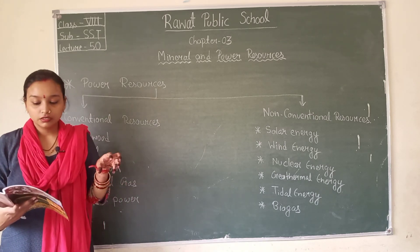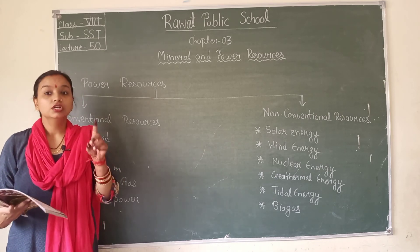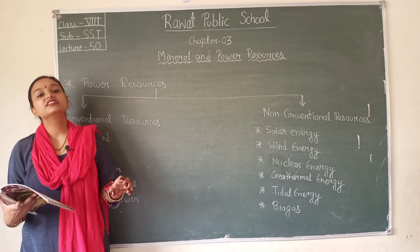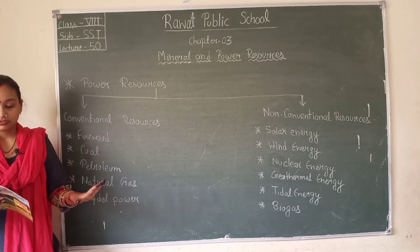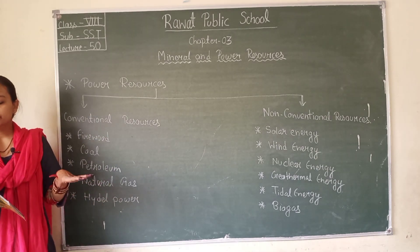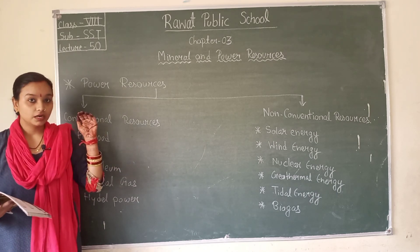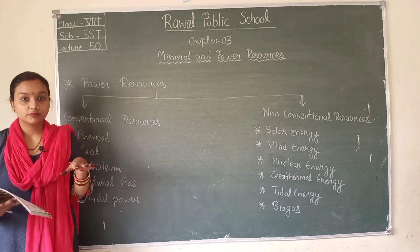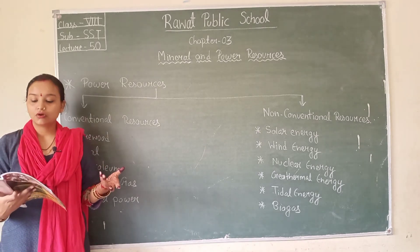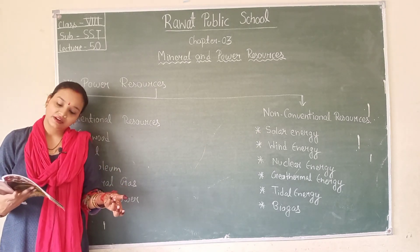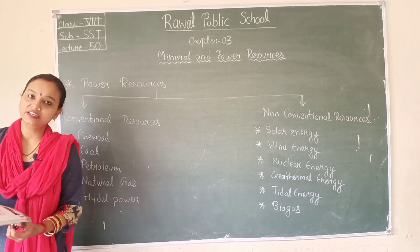One-fourth of the world's electricity is produced by hydroelectric power. Leading producers are Paraguay, Brazil, China, and India. In India, major hydroelectric projects include Bhakra Nagar Dam, Gandhi Sagar, Nagarjuna Sagar, and Damodar Valley projects.